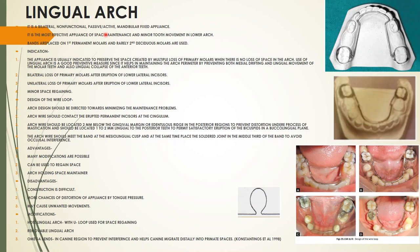Modifications of lingual arch: first, the Watts lingual appliance incorporates a U-loop for space regaining. Second, a removable lingual arch version is available. Third, the omega loop modification — an omega-shaped loop placed in the canine region to prevent interference and help the canine migrate distally into the primate space.